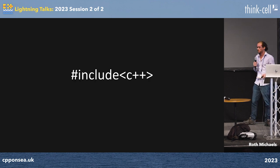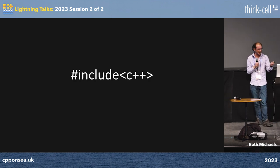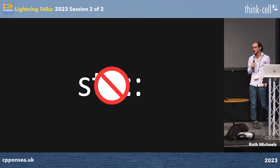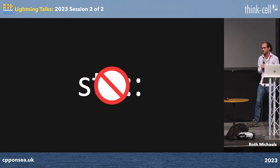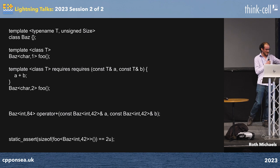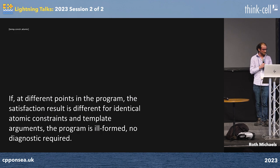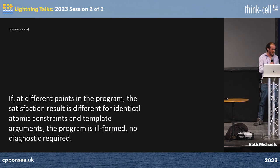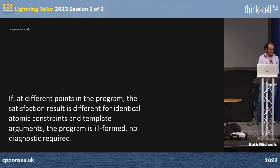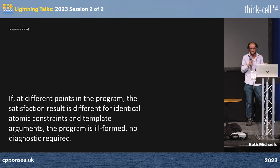I went on the Include C++ Discord. They told me you can't do stuff in the standard namespace. We made another example that doesn't use the standard namespace — same things happen. And someone points out part of the standard: if at different points in the program different things happen with the constraints, you're ill-formed.